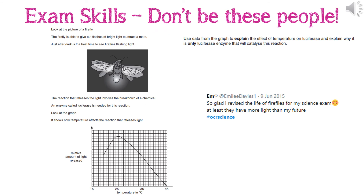Here are some past exam questions alongside the Twitter comments posted by other Year 11s for your entertainment. On the left is a question from a past additional science paper about fireflies, but it goes into lots of detail about enzymes and has an entire graph about temperature and its effect on enzymes. So this question is purely about enzymes. We haven't learned about fireflies — no, because that's irrelevant. It's the context. What we need to talk about is enzymes and temperature.